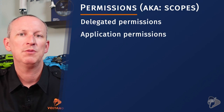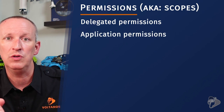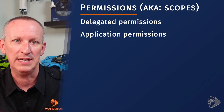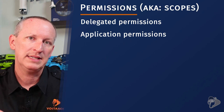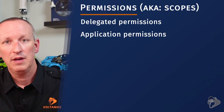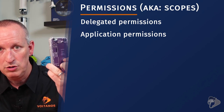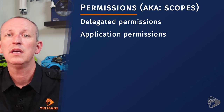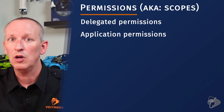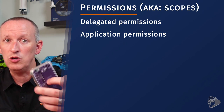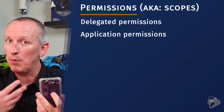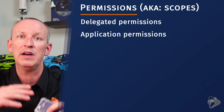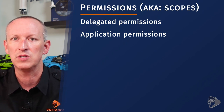The second type of permission is application permissions. Unlike delegated permissions, an app can use application permissions without a signed-in user present. These types of permissions are usually used in automated processes like services or daemons. Application permissions can only be granted by an administrator. Once an administrator grants admin consent, the app can act for anybody in the organization without a person present. Application permissions are very wide in scope and very permissive, so you want to be careful — that's why many organizations don't allow them.